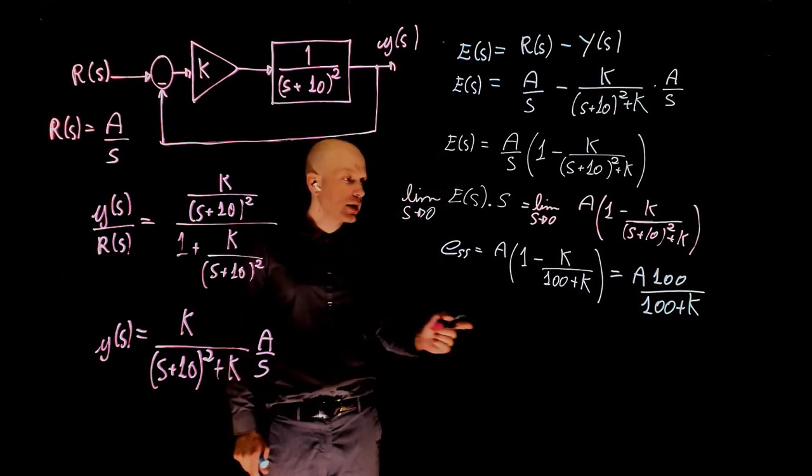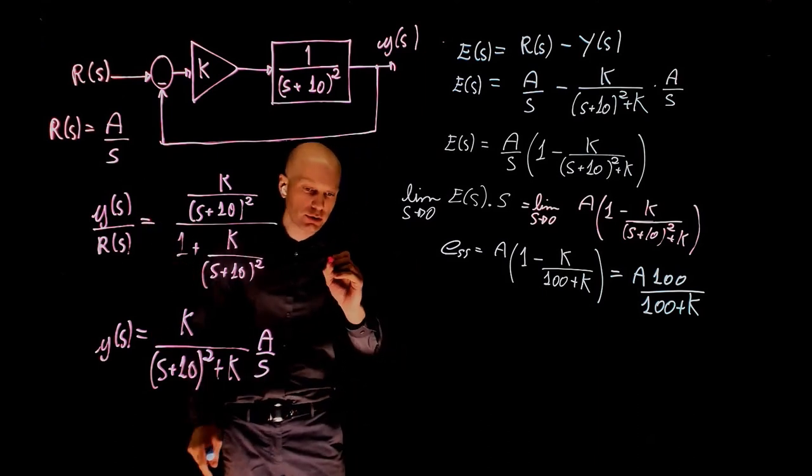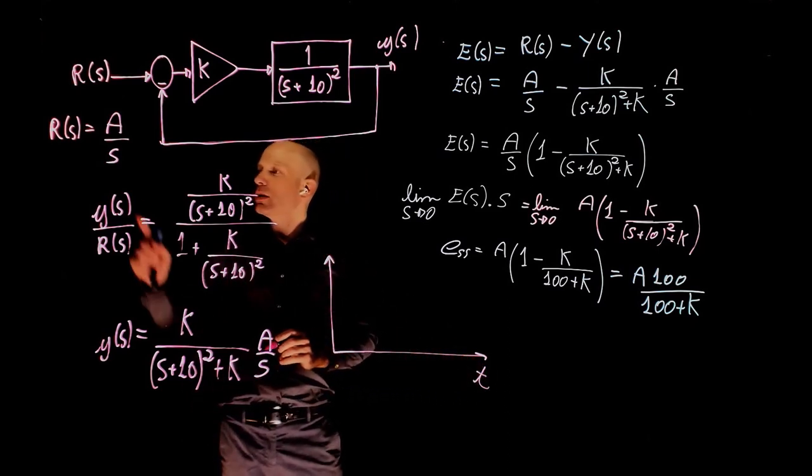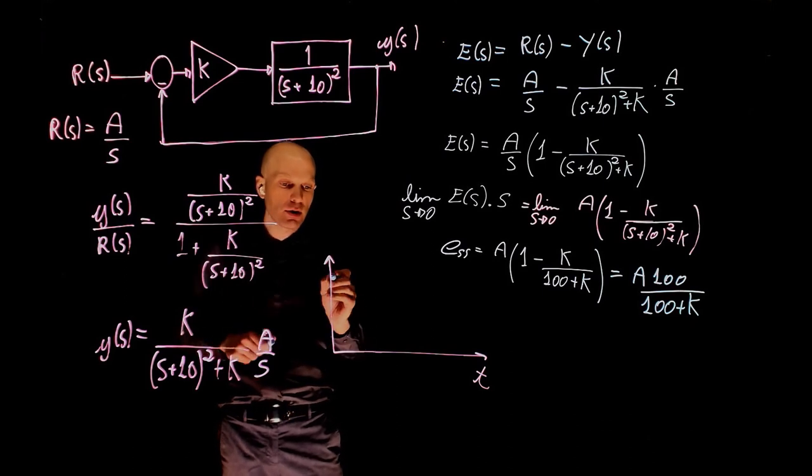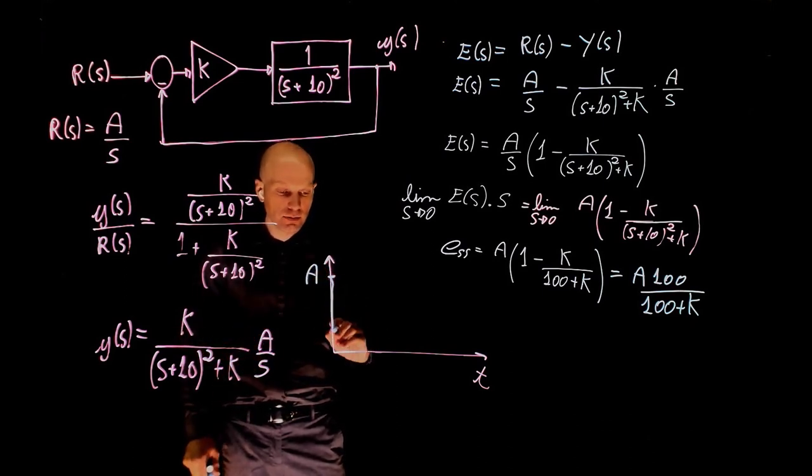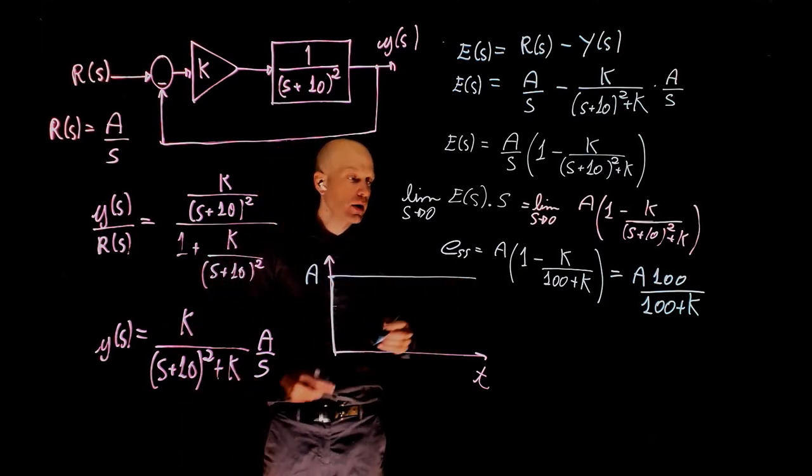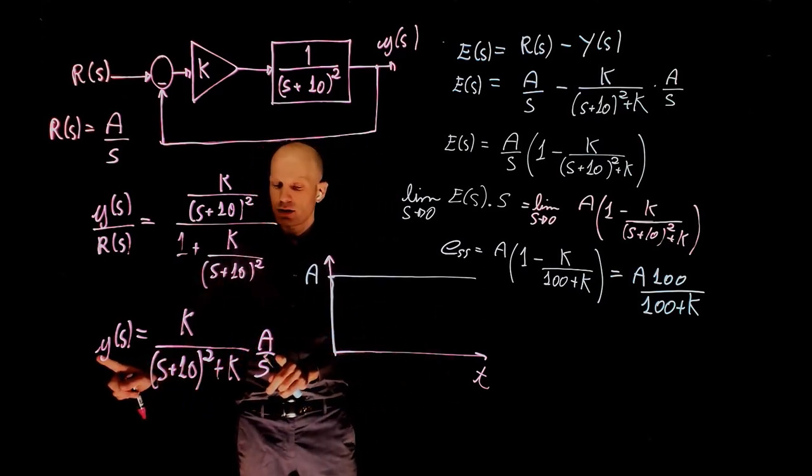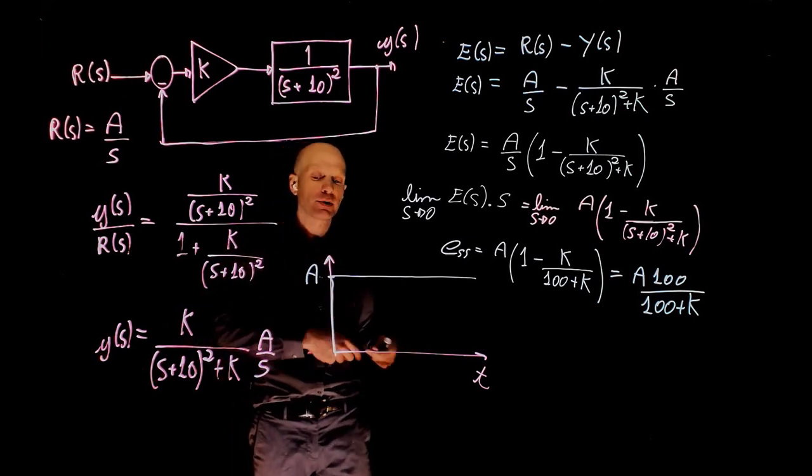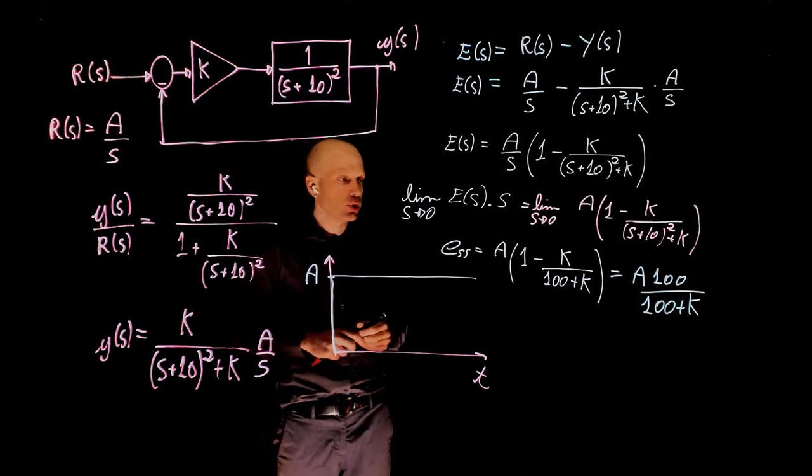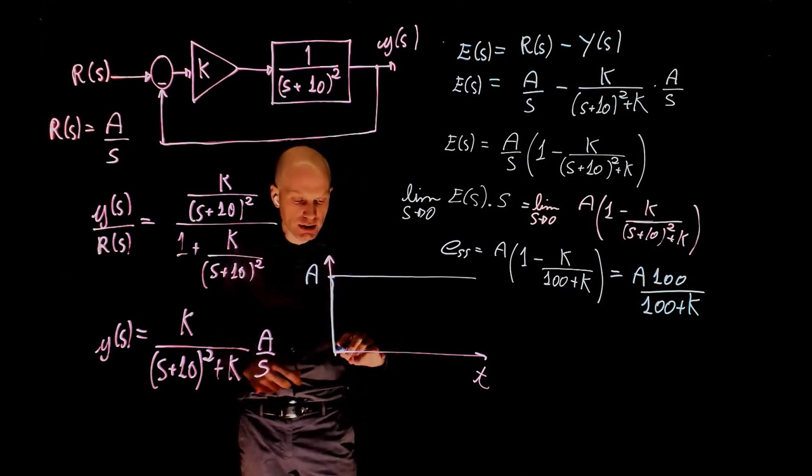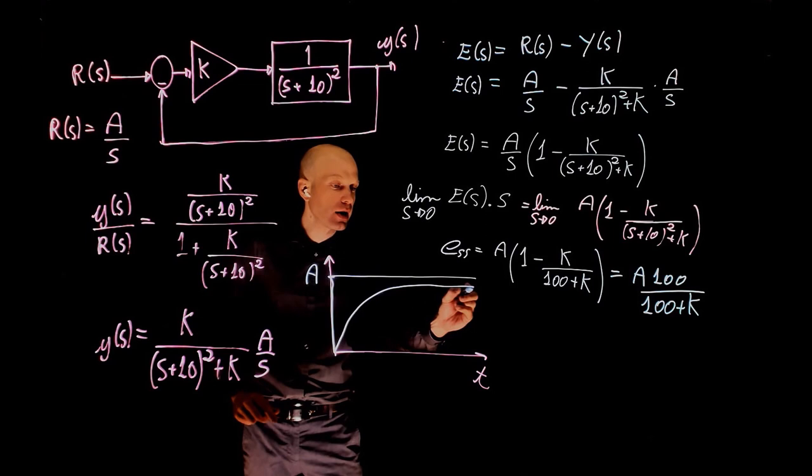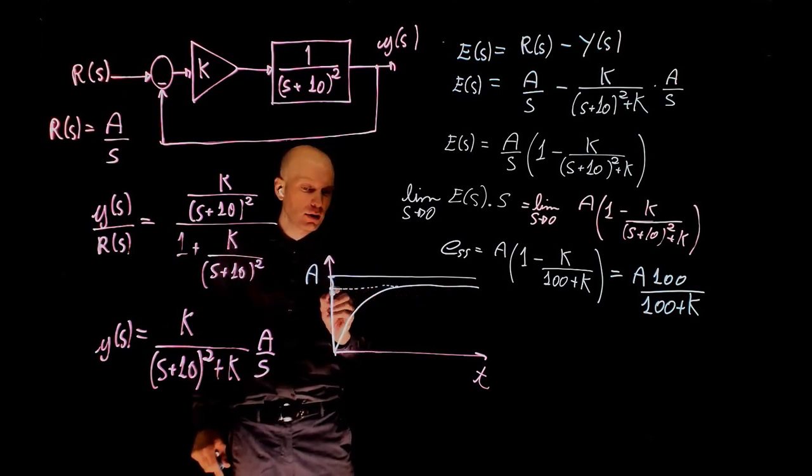What does that mean? Well, let's analyze the result we got here. This is the input, so let's draw here time. And the input, the input is a step, so the step goes from 0 to a at time 0. And the robot responds. The robot responds, and that response is the inverse Laplace of this expression. If this is an underdamped, overdamped, or unstable system, at this point we don't know. But it could have any shape. Let's assume, for instance, that this is an overdamped system. So it would go up as an exponential, and it would eventually settle at a given value.